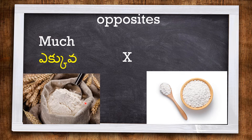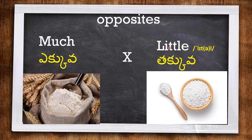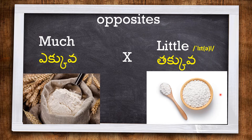The opposite of MUCH is LITTLE, meaning a small quantity. Here we have a little quantity of flour in a cup.